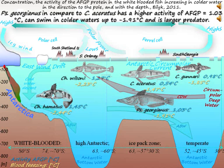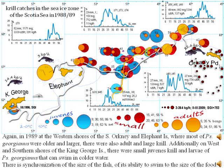It seems to be a role also for Georgianus, with the appropriate correction that Georgianus has about 2 times greater AFGP frost-protection activity than Aceratus. Georgianus, compared to Aceratus, has higher AFGP activity equal to 1.03°C, can swim in colder waters down to −1.91°C, and is ultimately a larger predator. The concentration and activity of AFGP in white-blooded fish increases in colder water in the direction toward the pole and with depth (Bolic, 2011).